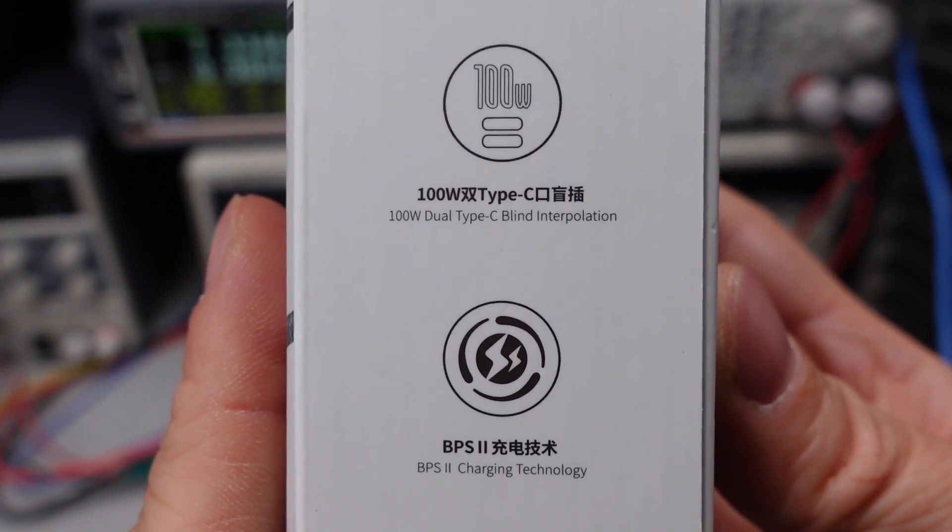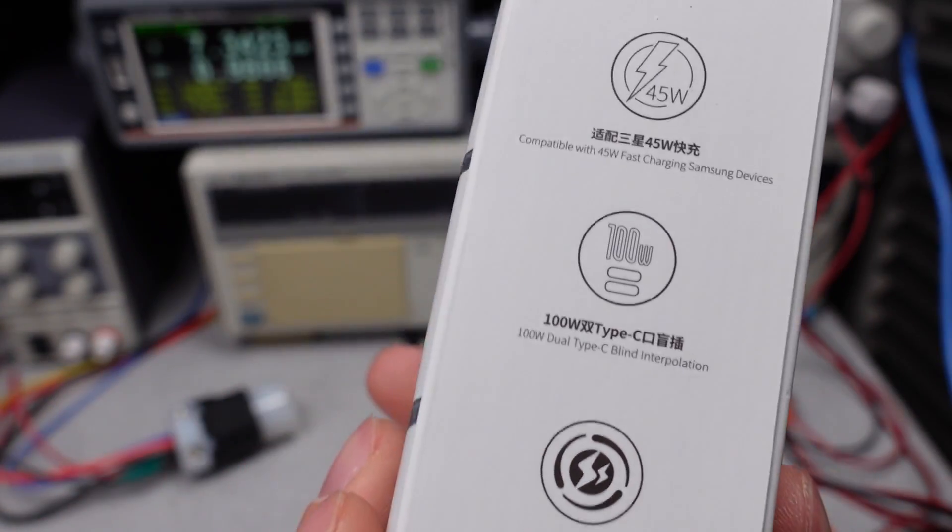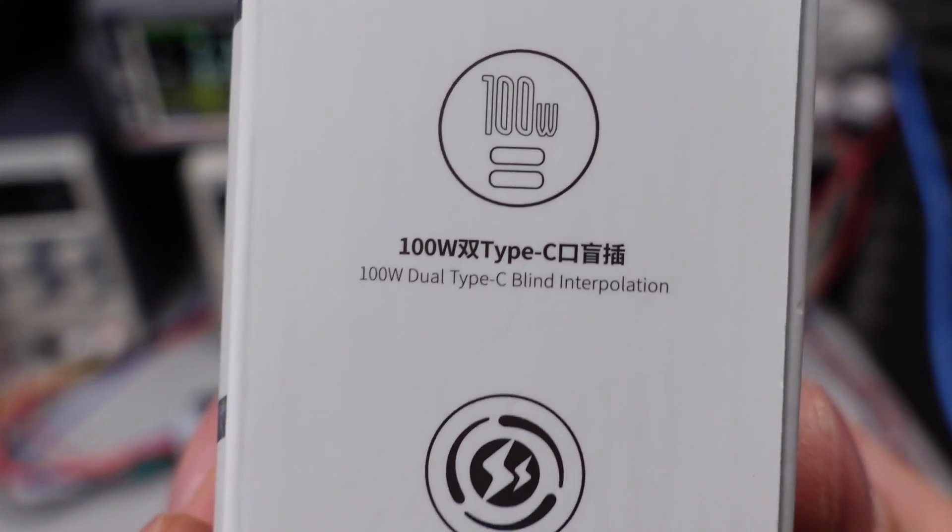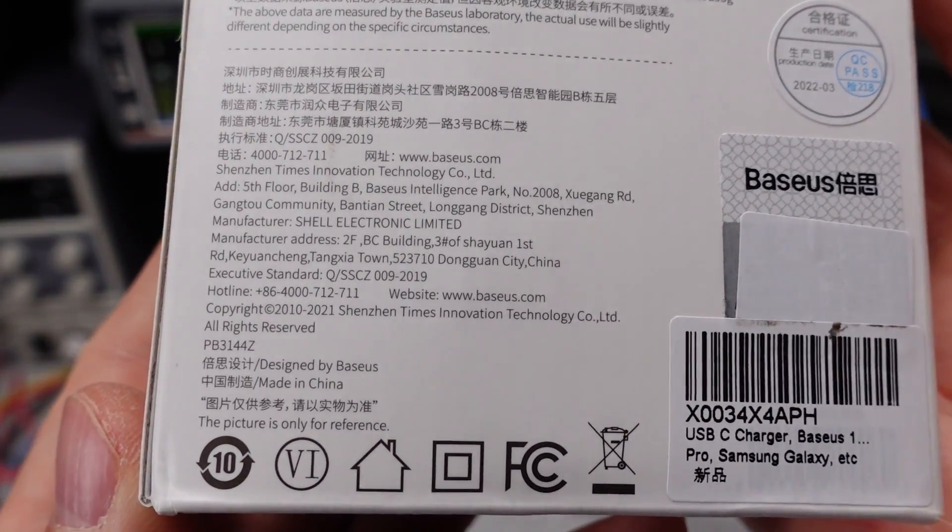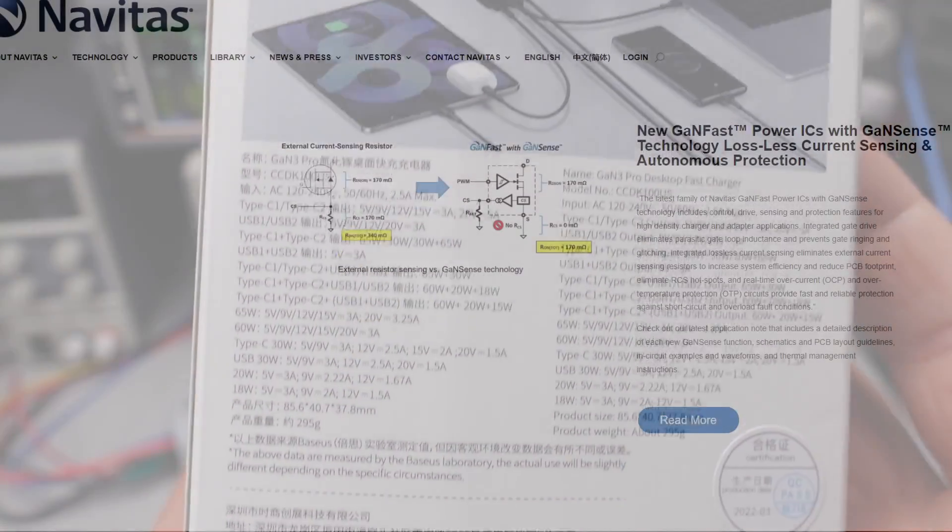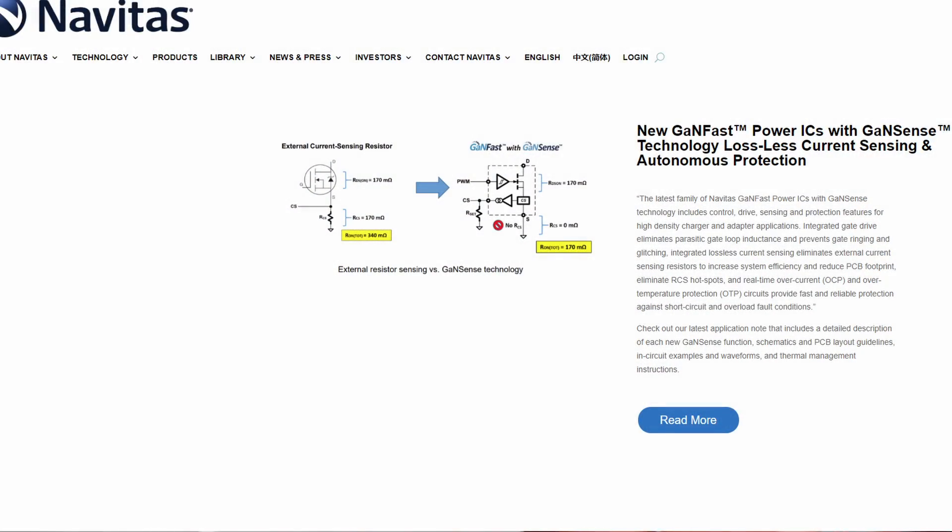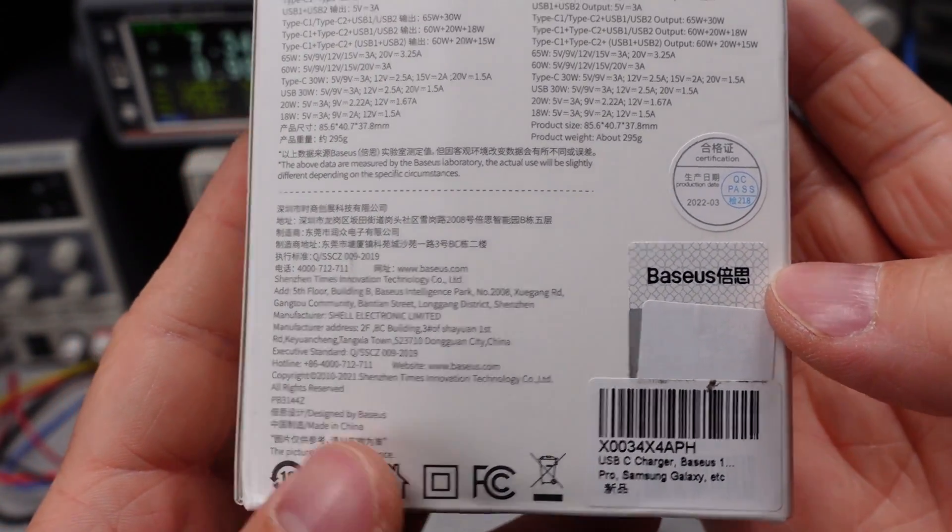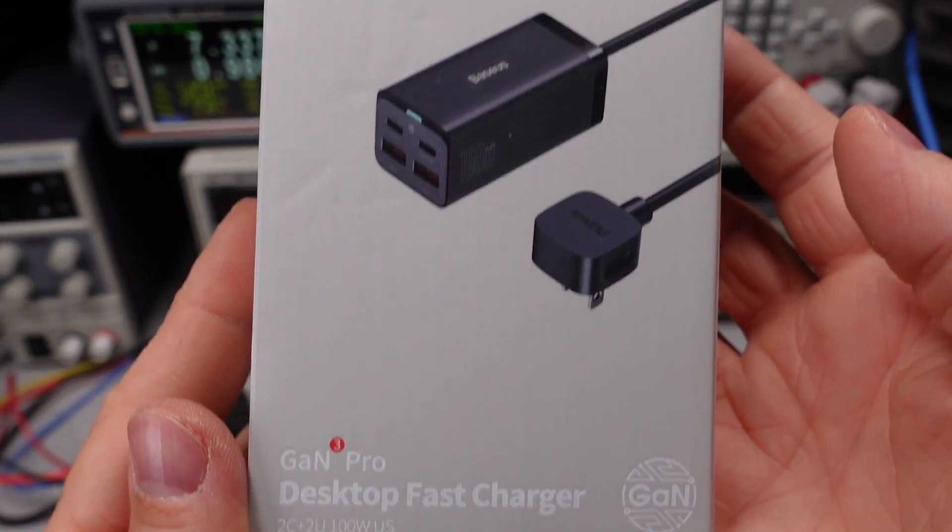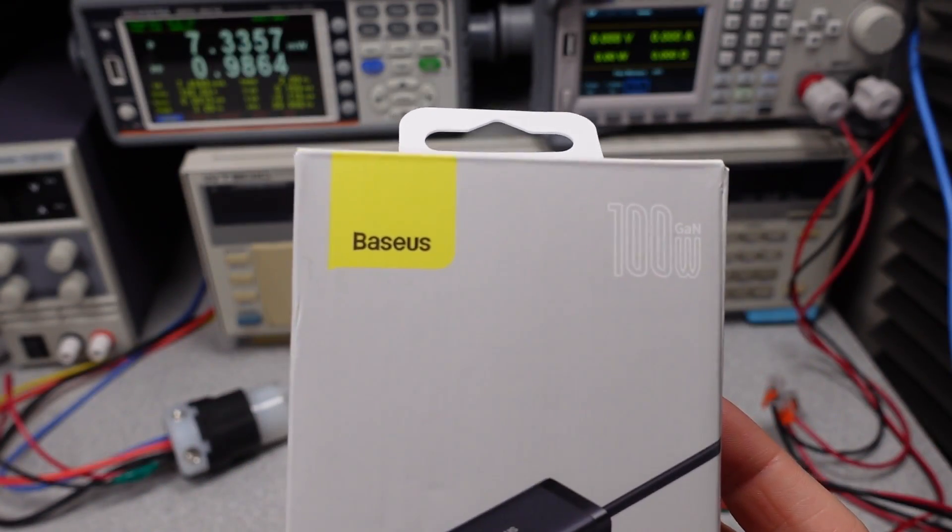The box, as usual for Baseus, gives you tons of information and lots of marketing. On the front of the box, and there have been several questions in the comments on this, we see the GAN3 or Cubed logo. There is a new generation of gallium nitride chips with something called Gansense. And that could be this, but I don't think that technology is in the product yet. I think this is a normal gallium nitride system and they just bumped the number up for marketing reasons.